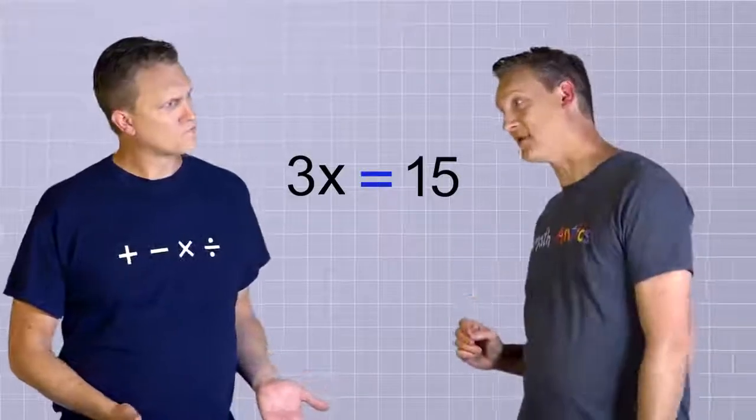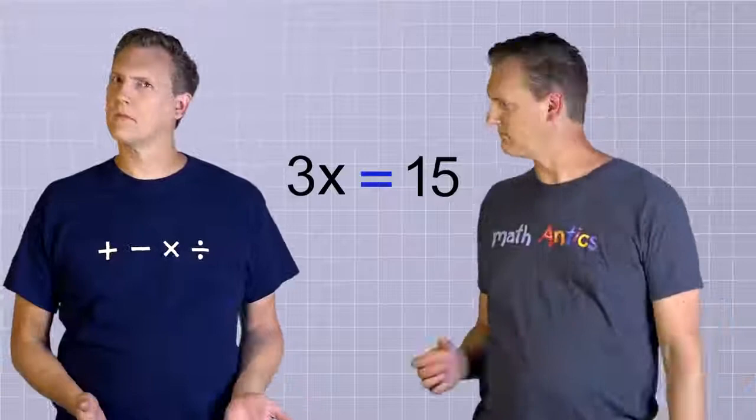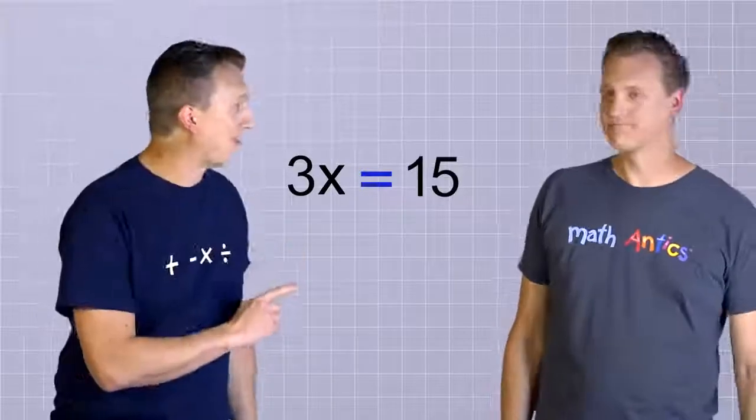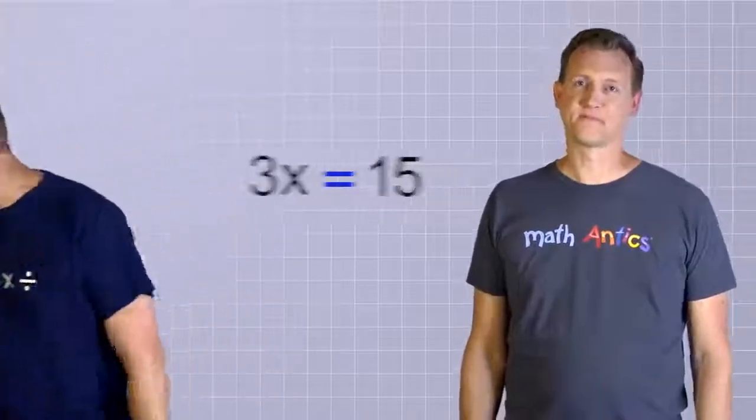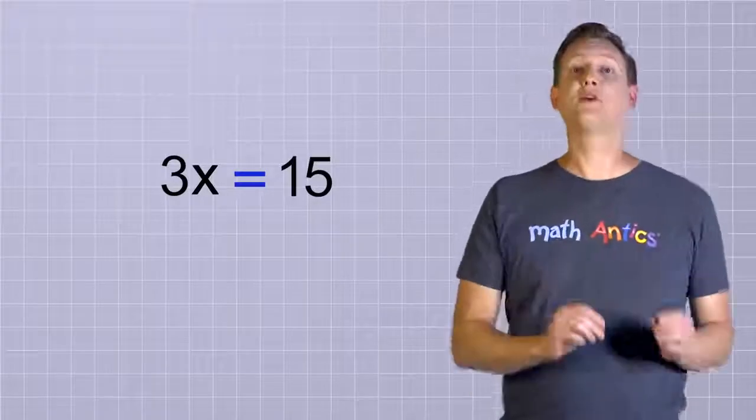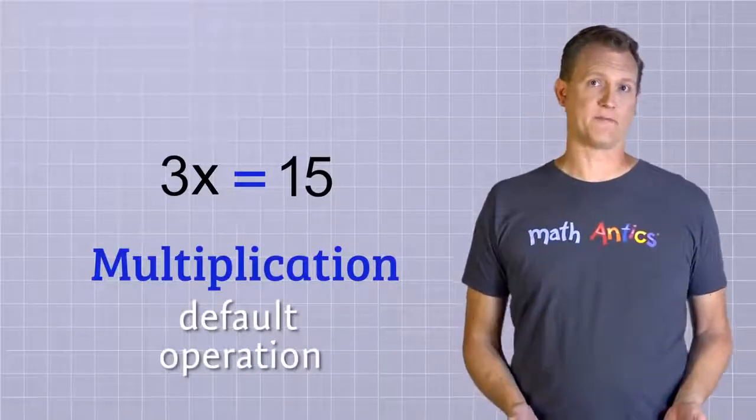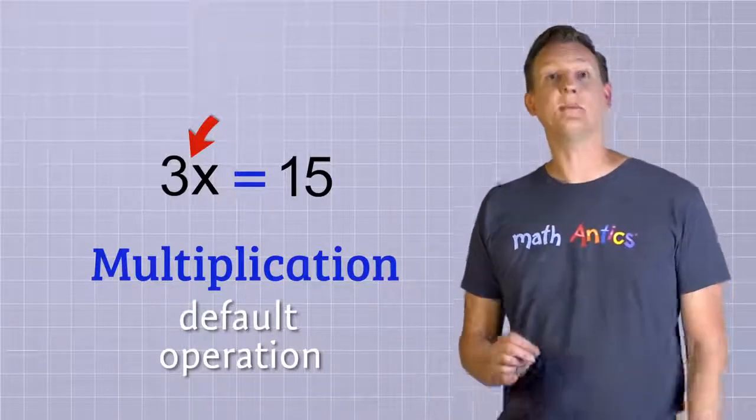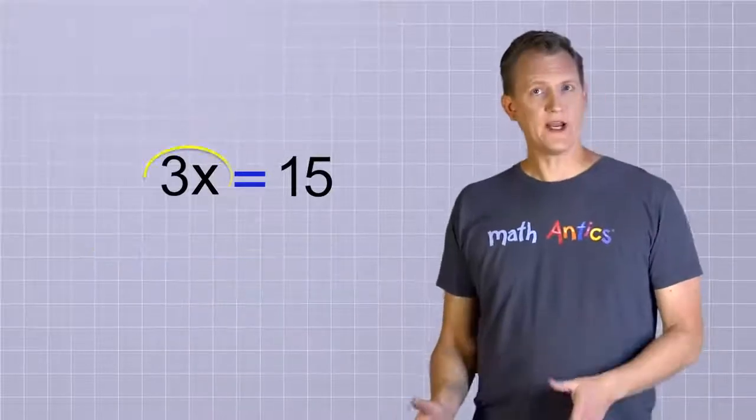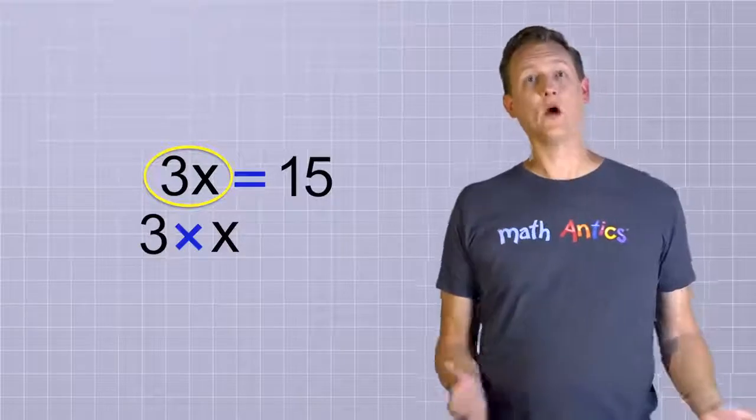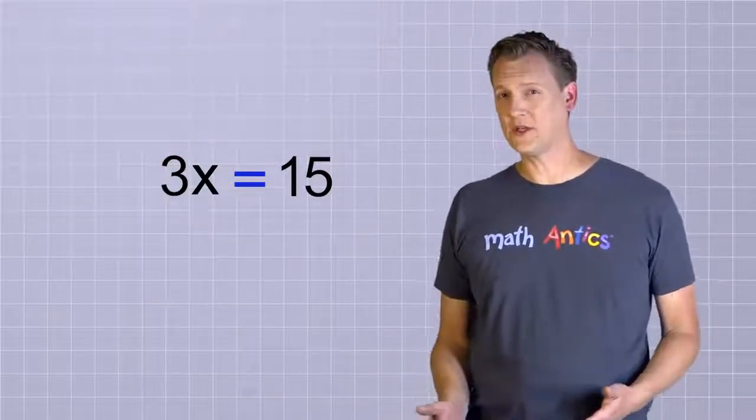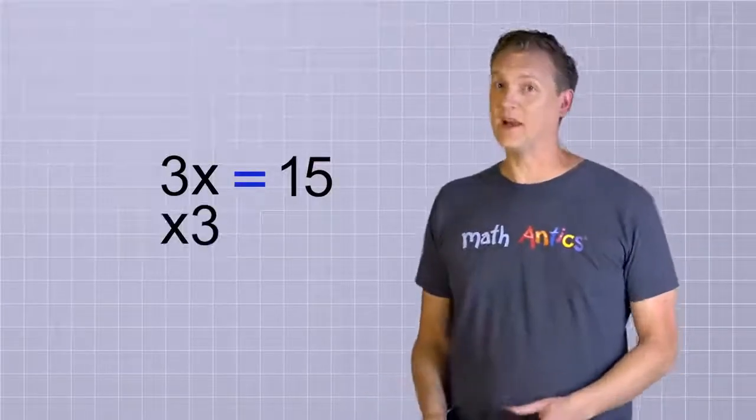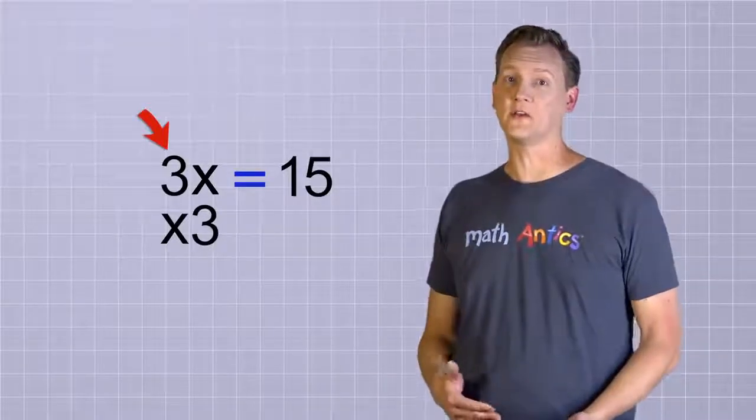I'm sure you remember that multiplication is the default operation in algebra. So when you see a number and a symbol right next to each other like this, with no operation between them, it means they're being multiplied. So 3x is the same as 3 times x. And just a side note: since in multiplication, the order of the numbers doesn't matter, you could switch the order and write x3, but it's customary to always list the known number first and the unknown number second.